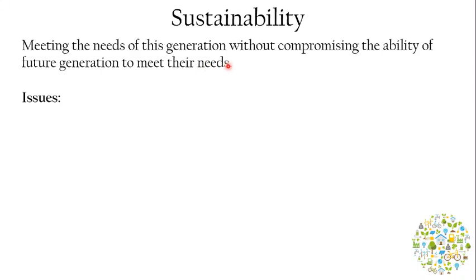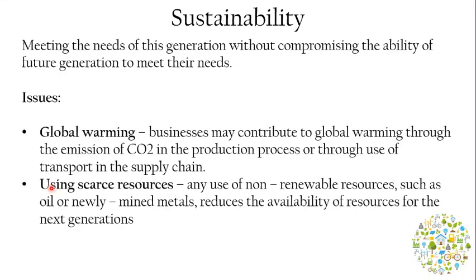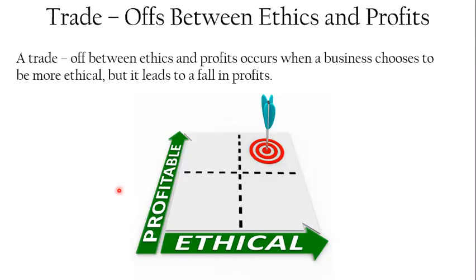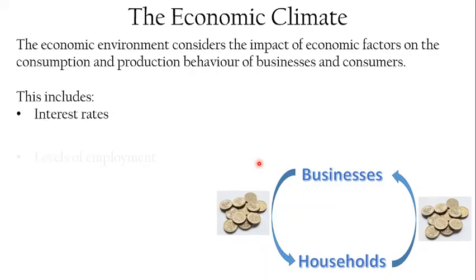Sustainability occurs when businesses become more environmentally friendly and meet the needs of this generation without compromising the ability of future generations to meet their needs - basically behaving in a way that reduces the threat of global warming and uses fewer scarce resources. Is there a trade-off between being ethical and being profitable? In the short term, a business may need to increase costs to be more ethical, but in the long run businesses may find that revenues increase and profits go up as a result.